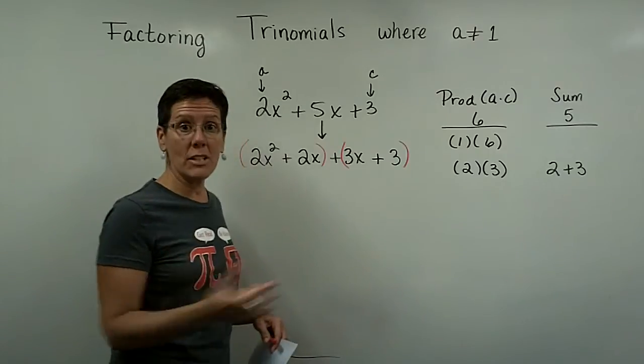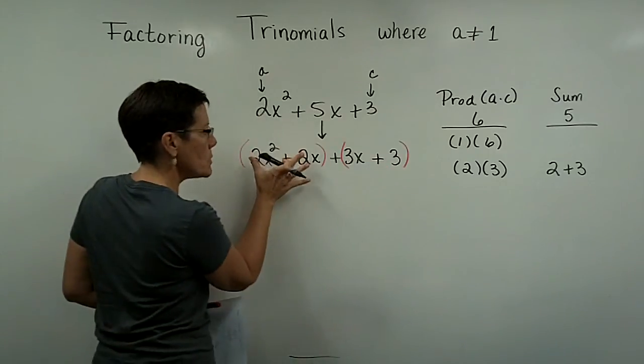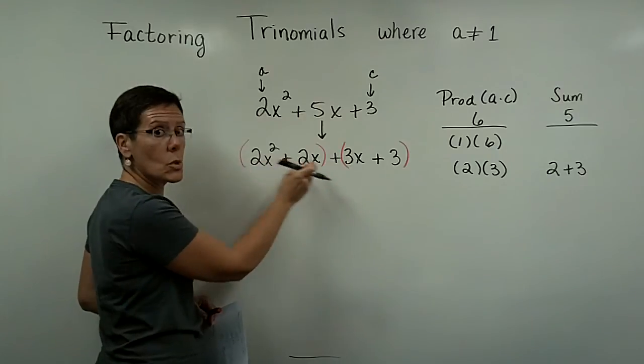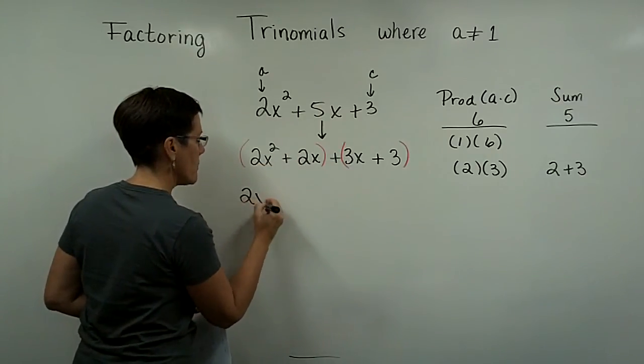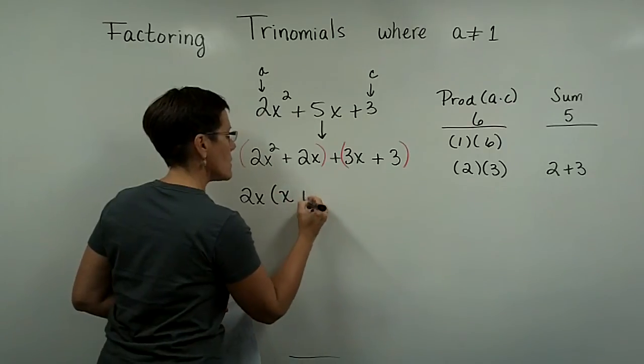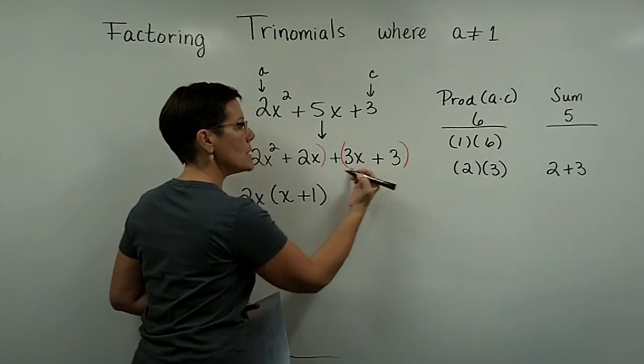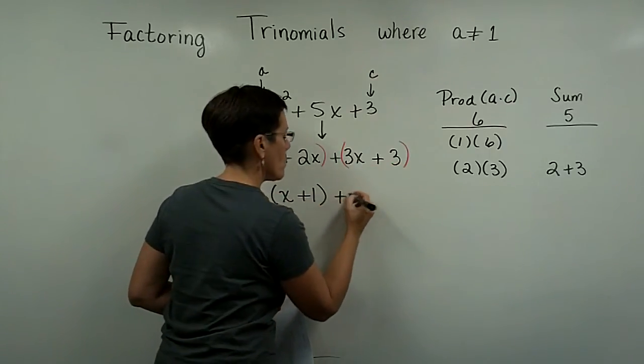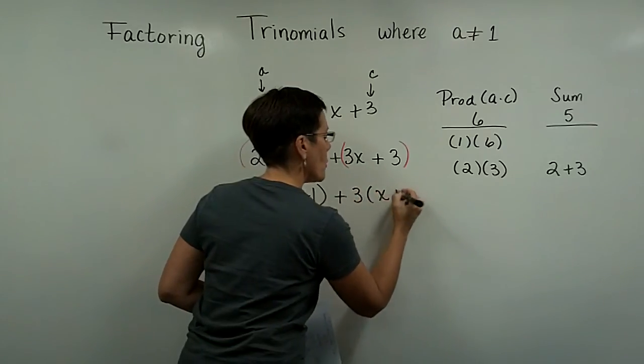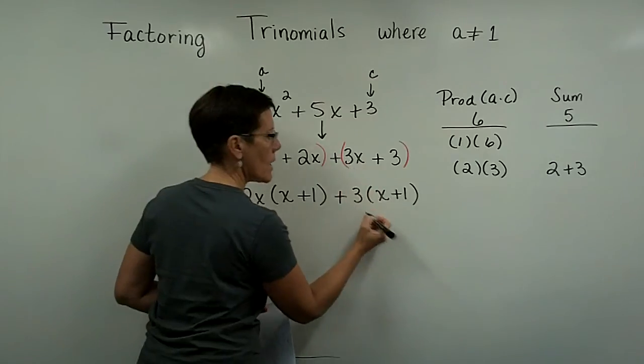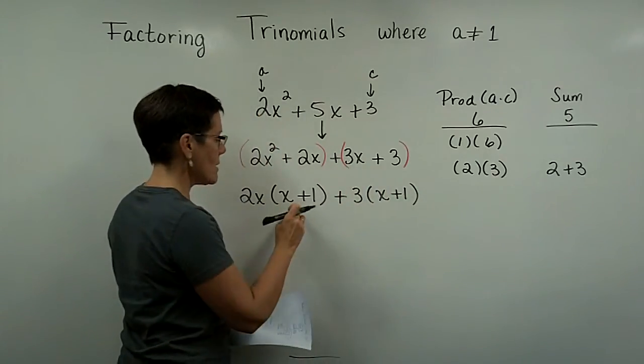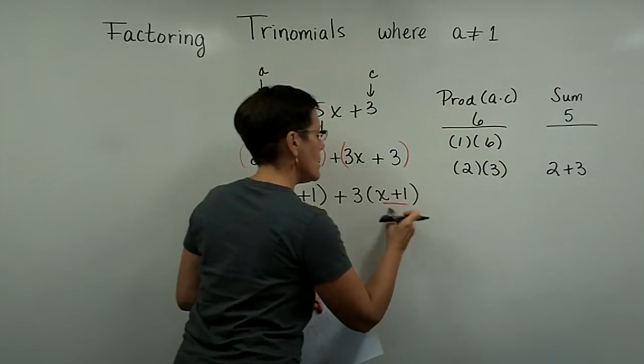And when we learned to factor a polynomial in four terms, we grouped two terms, we grouped the last two terms, and we took the greatest common factor out here, which in this case is a 2x. And then in the parentheses we need an x plus 1. And here we take the common factor of a 3 out and therefore we would need an x plus 1 because 3 times x is 3x and 3 times 1 is 3.